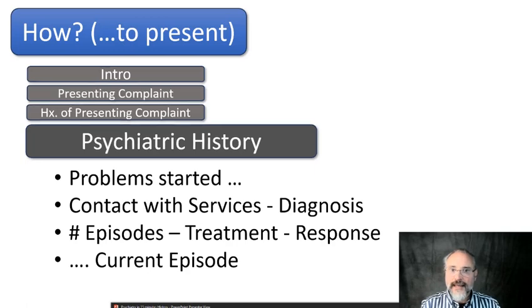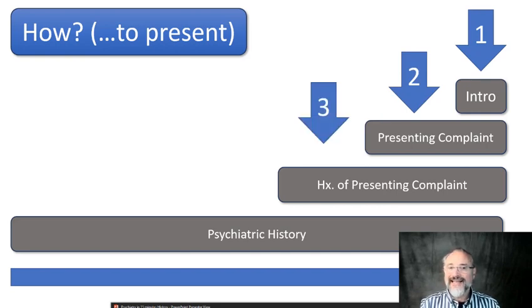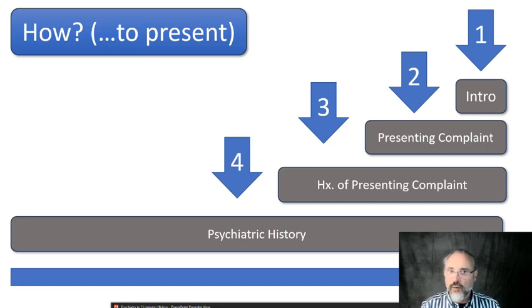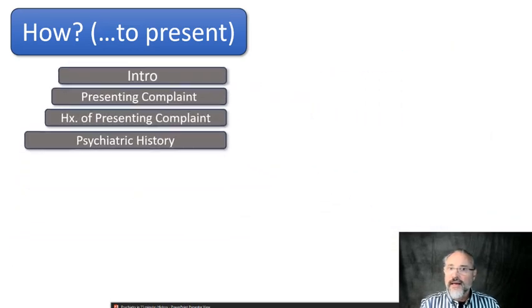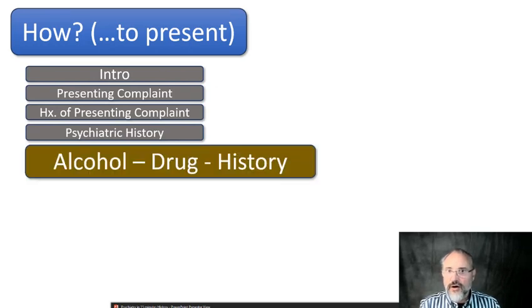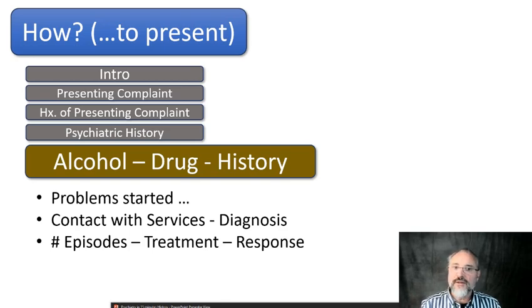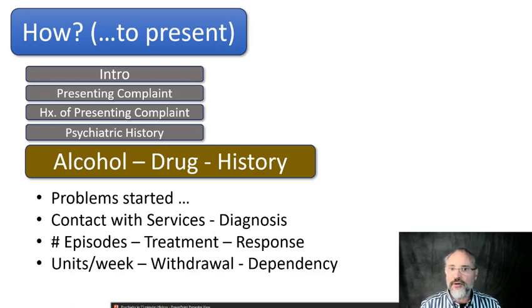These three or four headings are situated in time: you start with right now, then explain the presenting problem, then the history of the problem, then the background. So you're going backwards in time, which requires chopping up the stories several times. After that, you take more specific histories — such as a substantial drug or alcohol history, which needs to be taken carefully and somewhat separately. You follow the same structure: when the problem started, contacts with services, diagnosis, episodes, treatment, response. In an alcohol history, you need to provide how many units per week, whether they have withdrawal symptoms, and whether there is dependency.